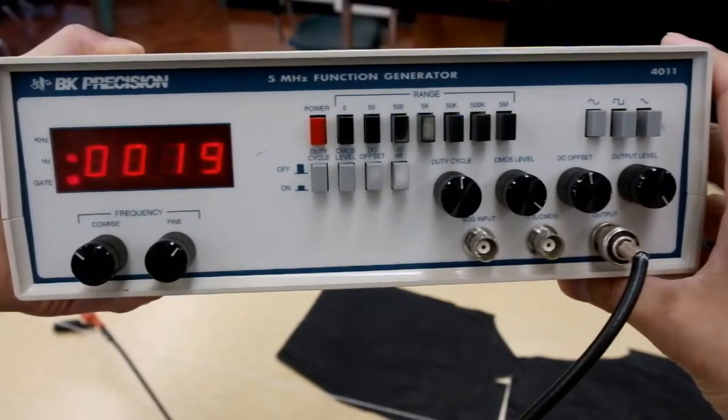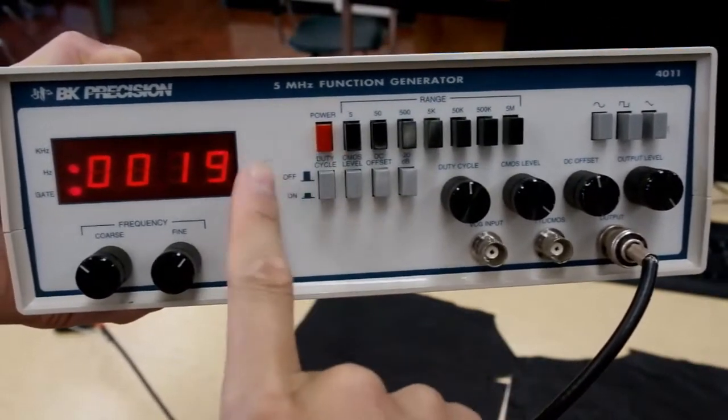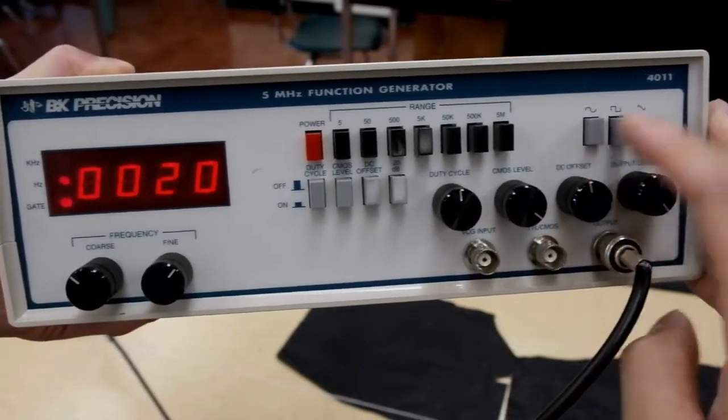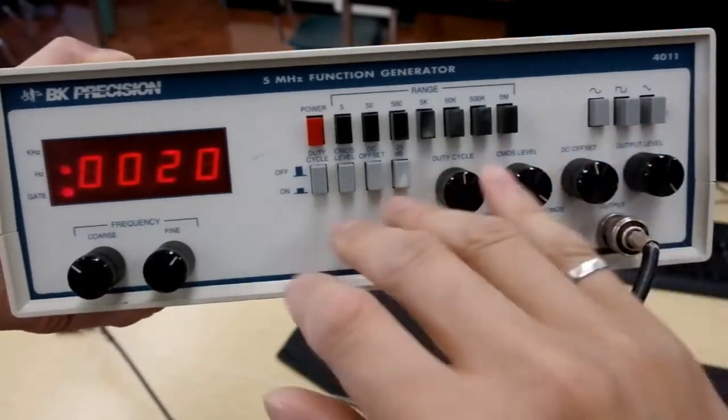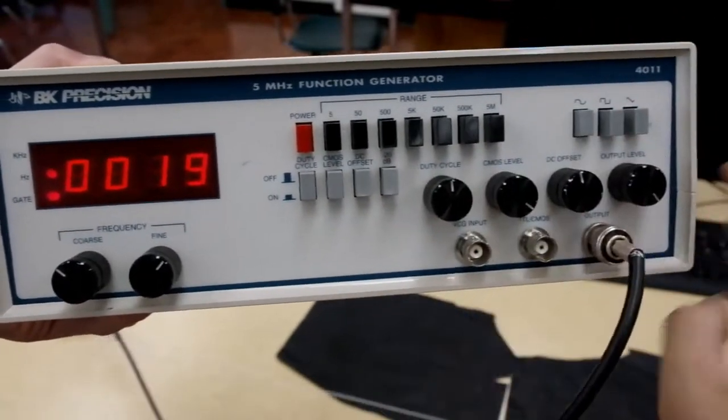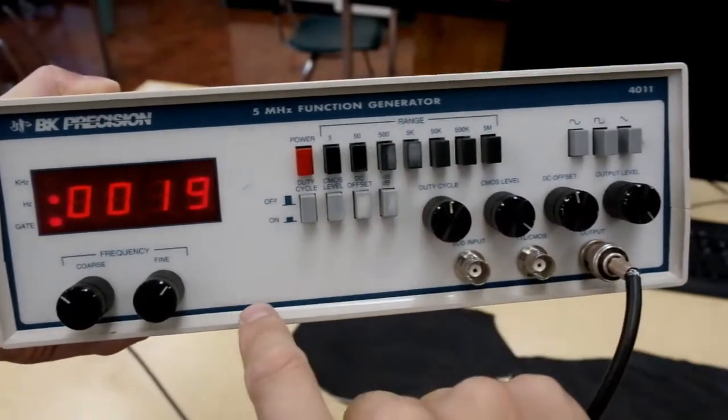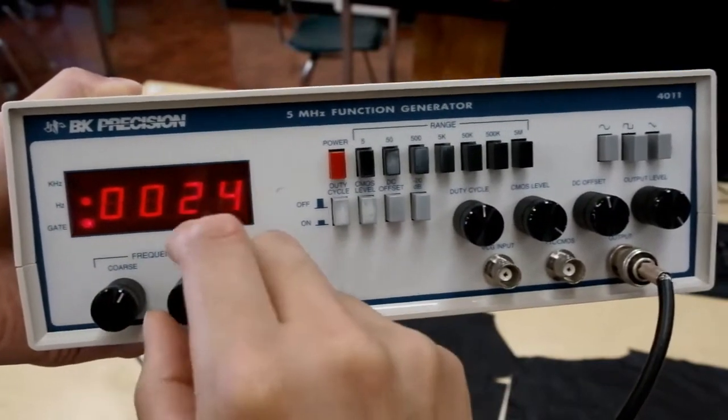So quick notes on the function generator itself. Here's the power button. You push it in to make it on. You want to make sure we're using the sine wave, and the output level is on maximum. That's maximum amplitude there. The rest we don't really have to touch. Then last, we have to change the range. Usually 50 is a good place to start. And then we can change the frequency using the coarse and the fine knob.